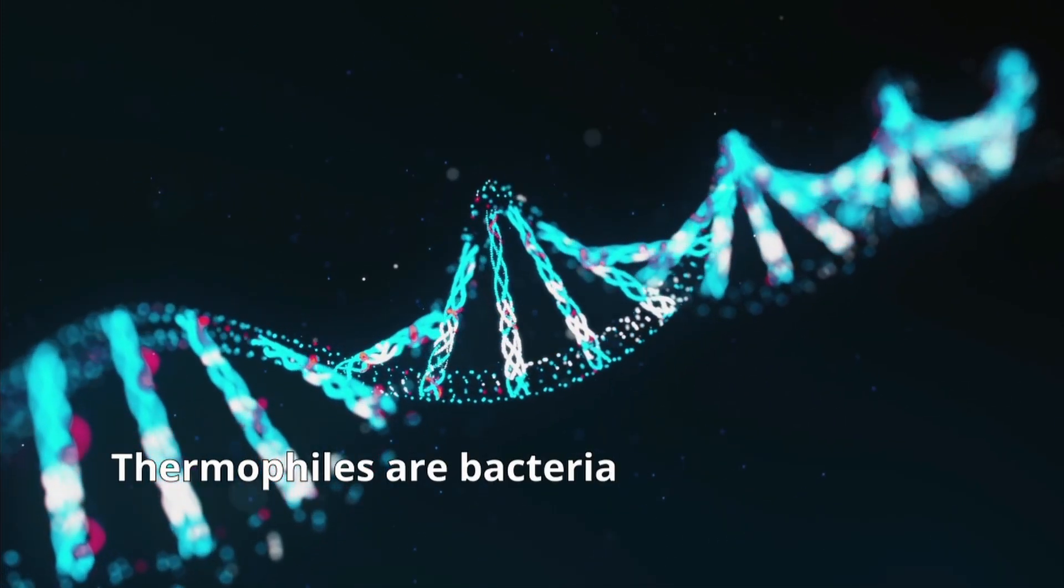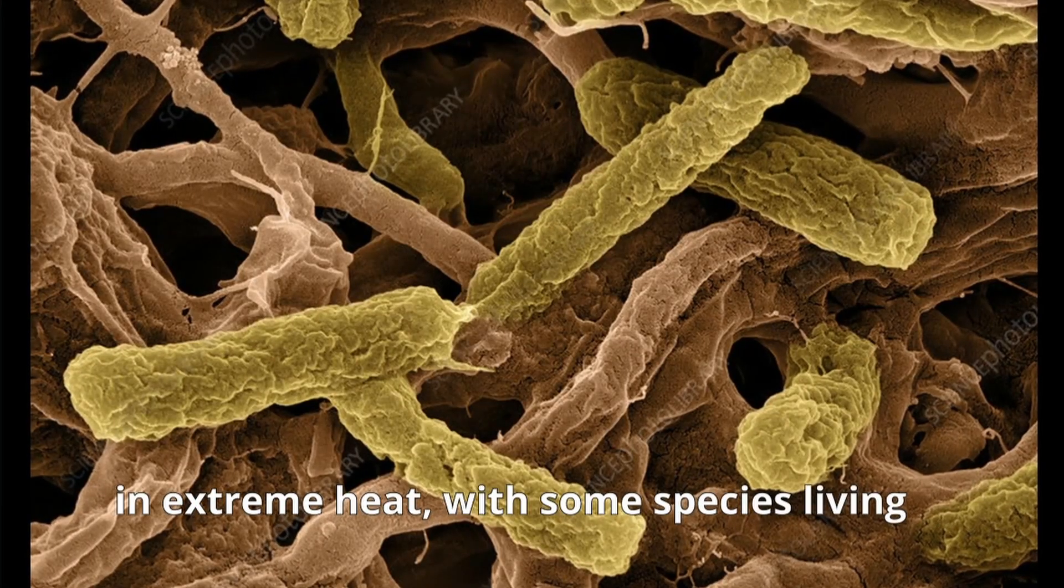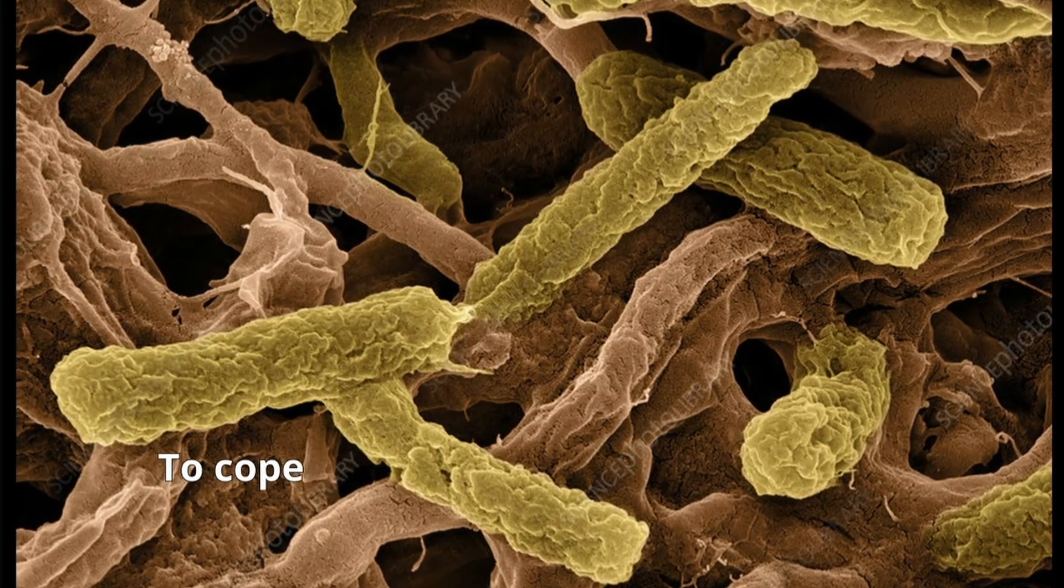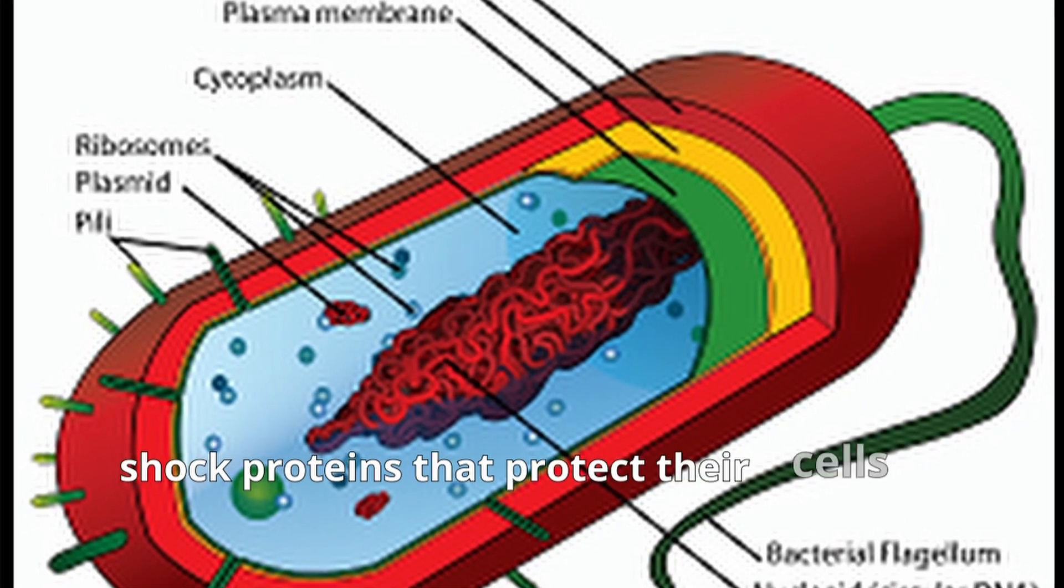Thermophiles are bacteria and archaea that can survive in extreme heat, with some species living in temperatures of up to 122 degrees Celsius. To cope with the heat, these organisms produce heat shock proteins that protect their cells from damage.